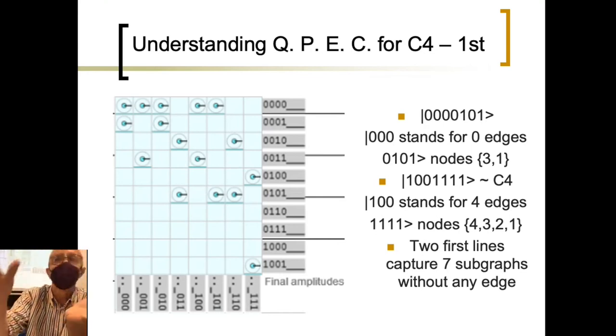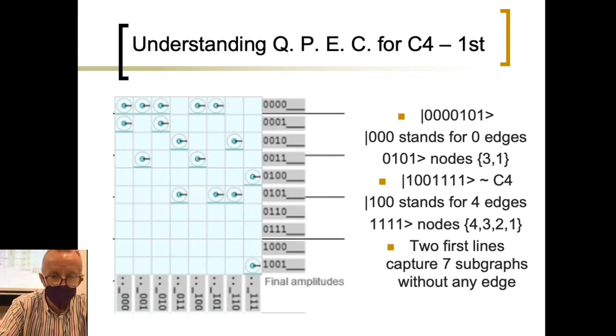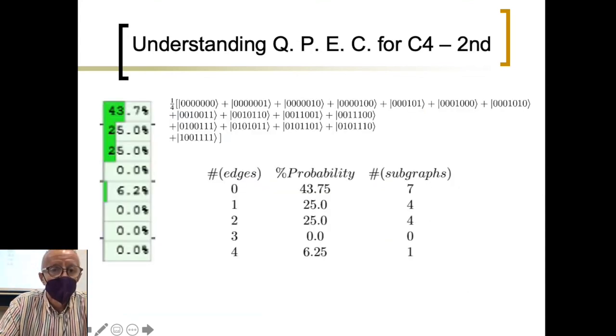Of course, in line third and fourth, what we get is the number of subsets with one edge and so on. So, we can summarize that in that way. I have just represented those elements of the Hilbert space basis having non-zero amplitudes. And these are the elements you can see. And the information provided on the part, which is the phase estimation, give us this information, which is: